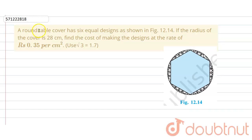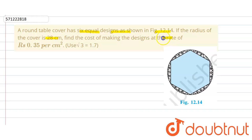In the given question, a round table cover has six equal designs as shown in the figure. If the radius of the cover is 28 centimeters, we have to find the cost of making the design at the rate of rupees 0.35 per centimeter square.